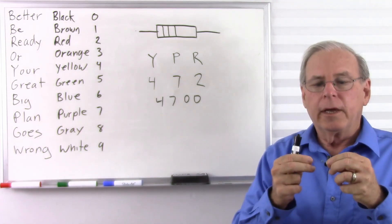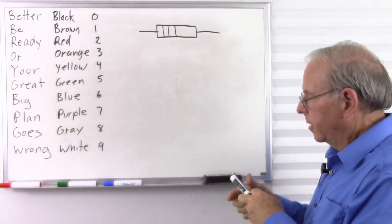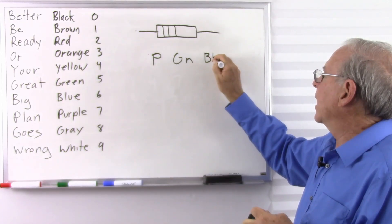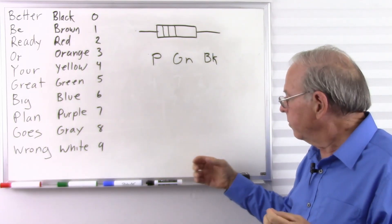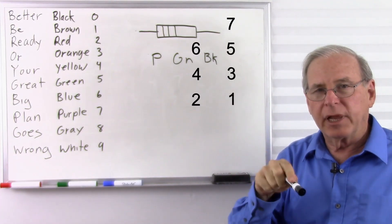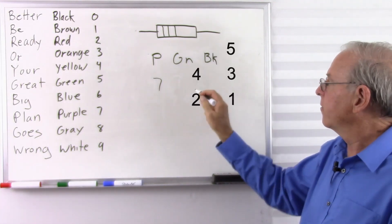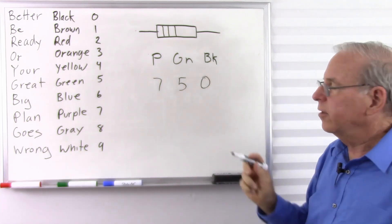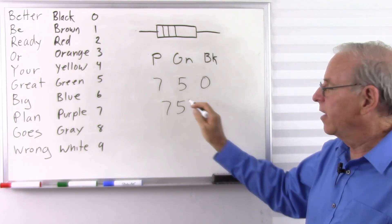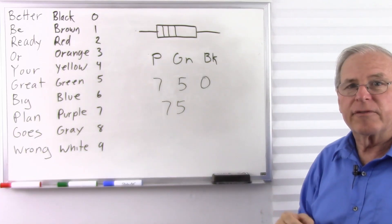Here we have purple, green, black. Just remember that black is zero. Purple: Be Ready Or Your Great Big Plan — that's seven. Green: Be Ready Or Your Great — that's five. And then black is zero — zero zeros. So this is 75 ohms.